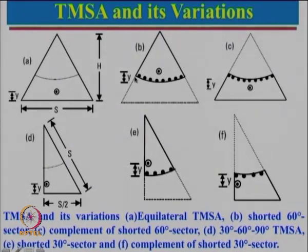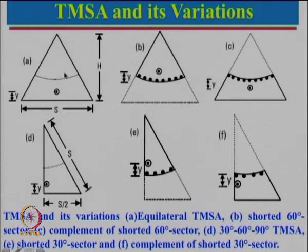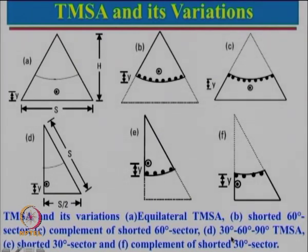Here also we have the same possibility: instead of shorting the entire axis, we can just place a single shorting post, making the configuration even more compact. Just like the circular microstrip antenna going to a semicircle, the equilateral triangular microstrip antenna has the same resonance frequency as a 30-60-90 degree triangular microstrip antenna, also known as a half equilateral triangular microstrip antenna.